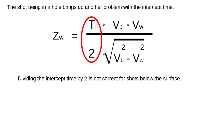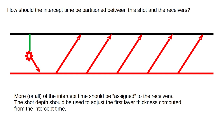The shot being in a hole brings up another problem with the intercept time. Dividing the intercept time by two is not correct for shots below the surface. The shot depth should be used to adjust the first layer thickness computed from the intercept time.